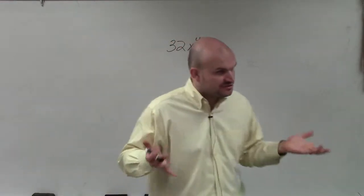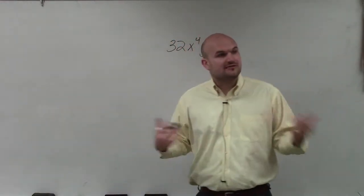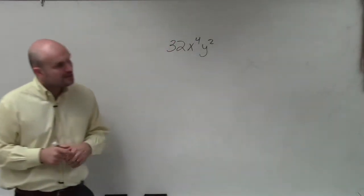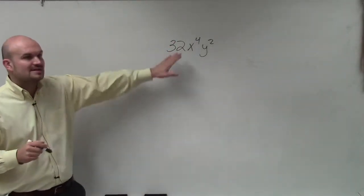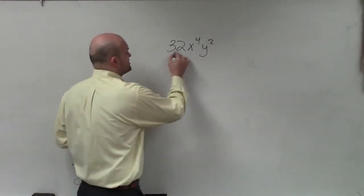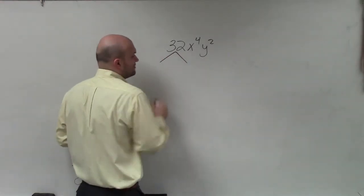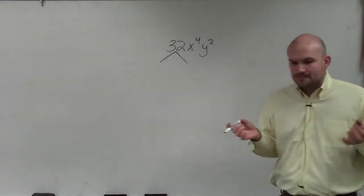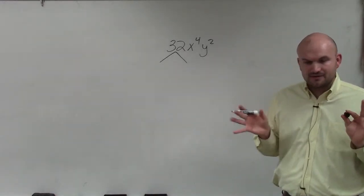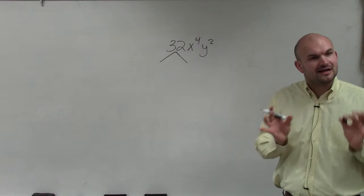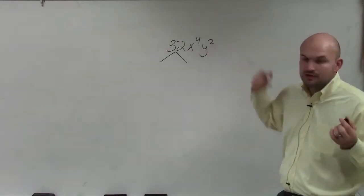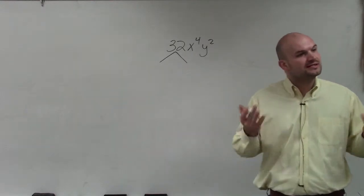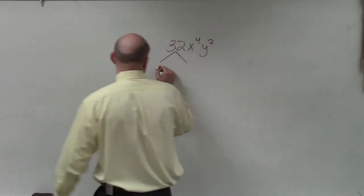The easiest way to do this is to get started with the factoring tree, which you guys hopefully have been doing since about sixth grade or so forth. One of the things you guys can do is just break down 32 by finding two factors that multiply to give you 32. The larger the factors you can get, usually the better. You know if it's even, you can always divide by two, but we always want to see if we can find higher factors than that.